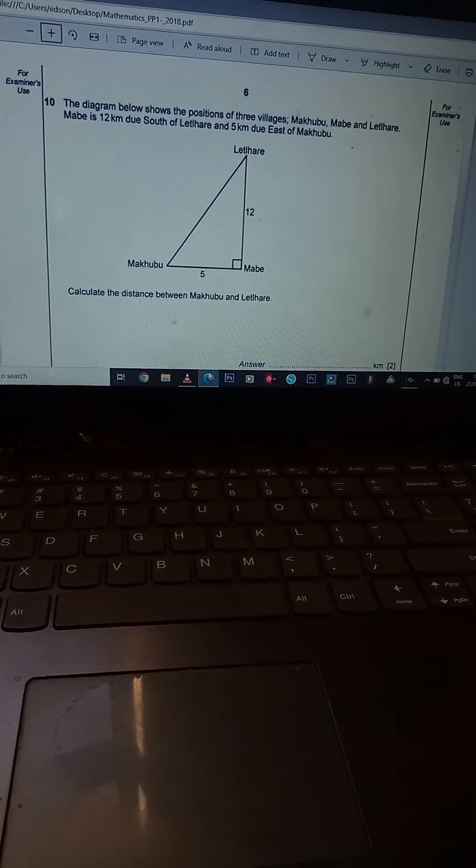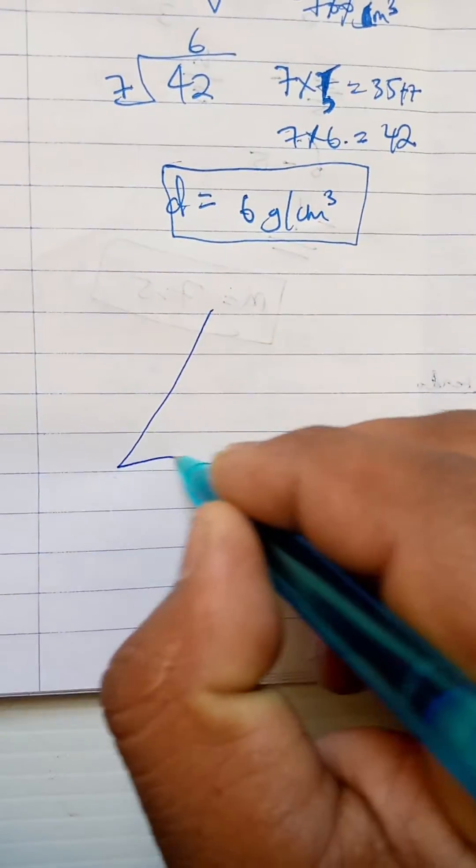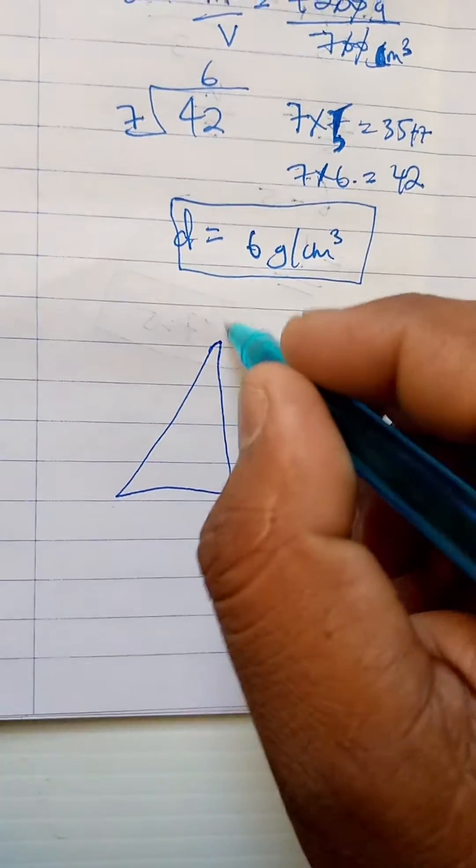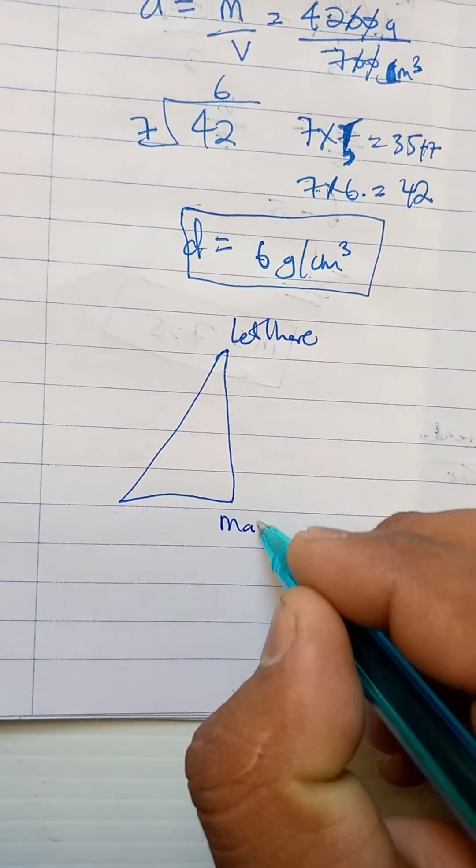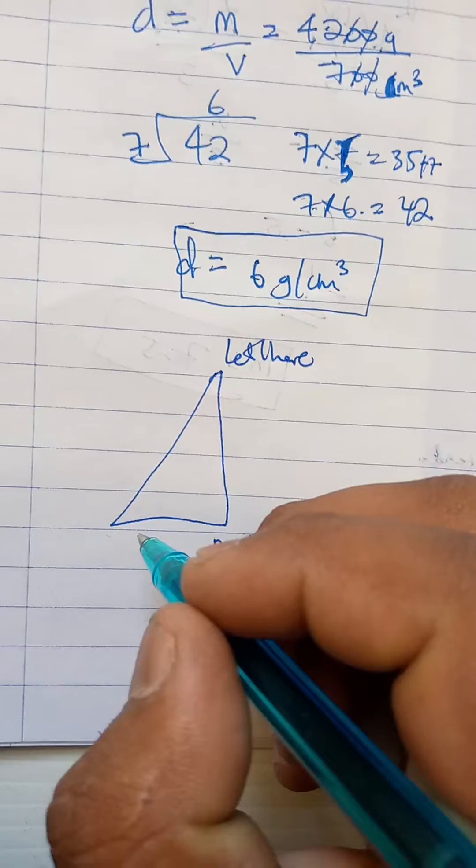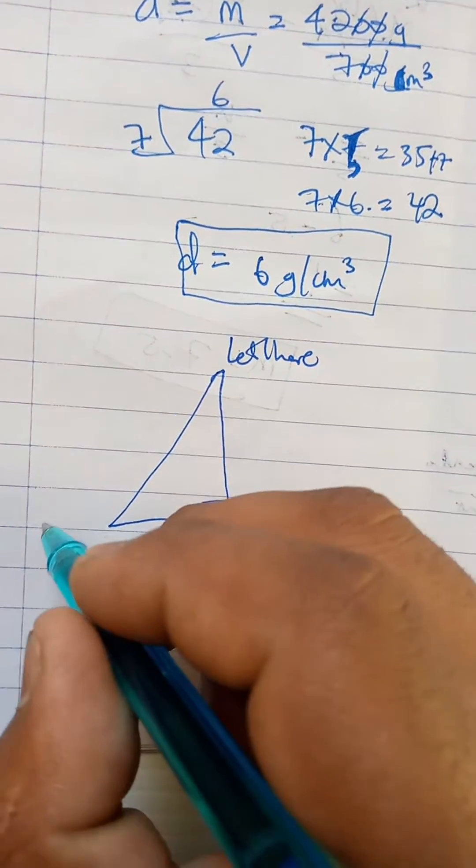Okay, let's put our diagram there. So they're saying this is Little Haru, this is Mabe. Don't mind my triangle. This one is going to be Makubu.